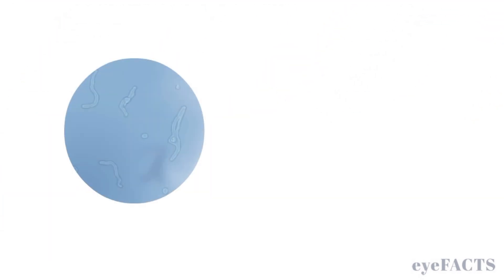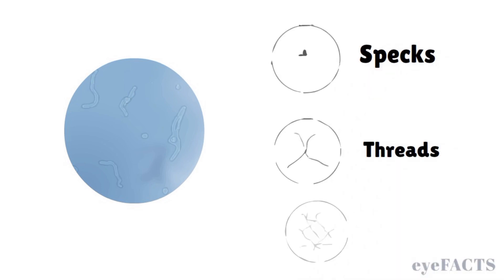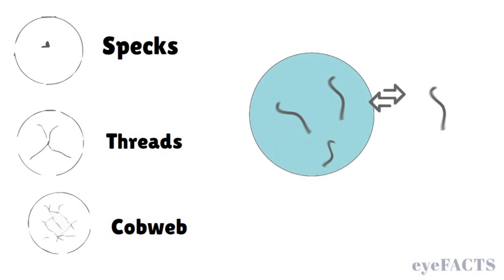Floaters can have many different shapes. Some people see them as specks, threads, or cobweb-like shapes. They can move in and out of your field of vision and seem to drift away when your eyes move.